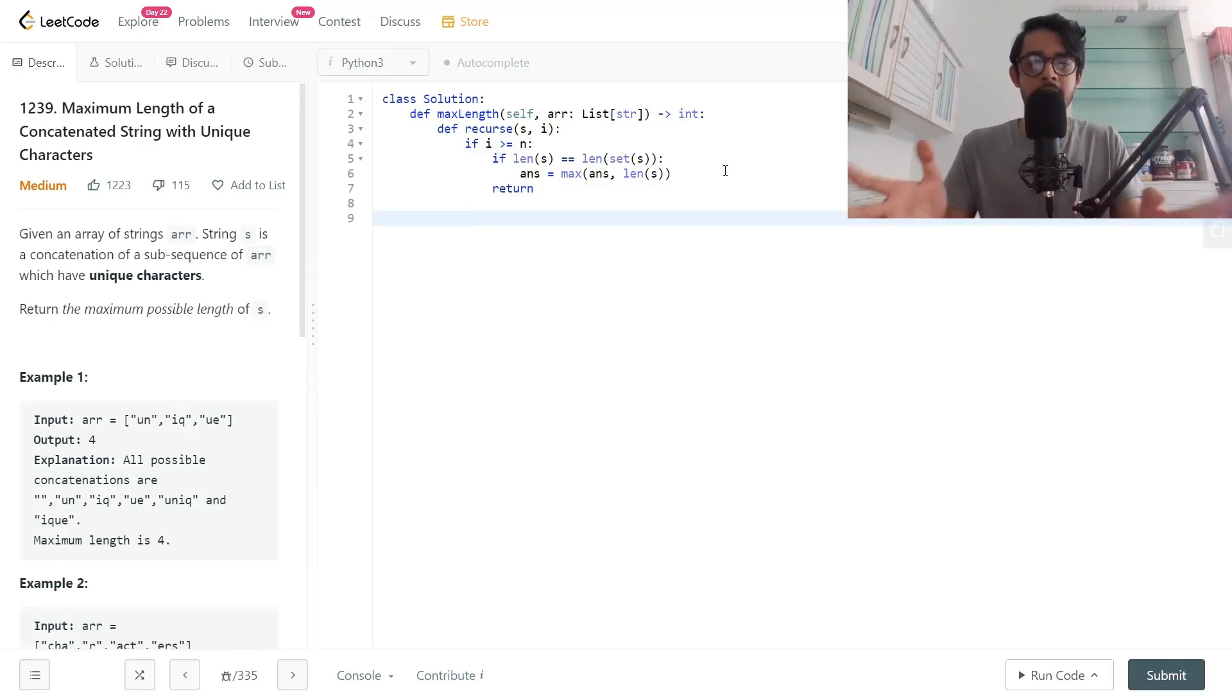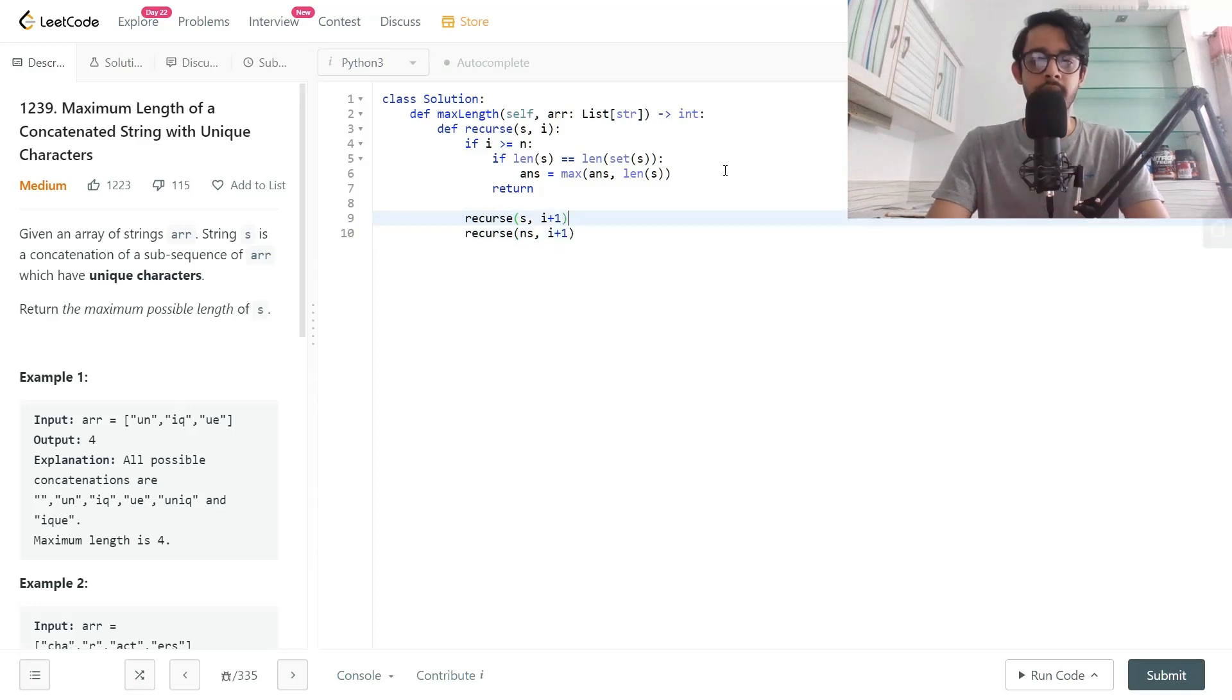The recursion itself is very simple. We'll have recurs for the next element. If we decide to exclude it, pass the string as is. If we decide to include this new string, we'll write it as string plus the current word.